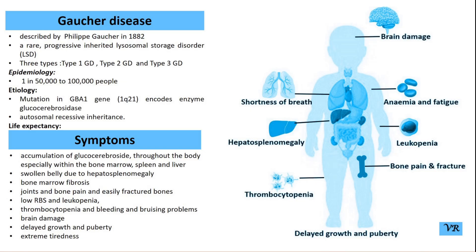The GBA1 gene is present on chromosome 1 at position q22, consists of 12 exons, the size of the gene is 7.6 kb, and it encodes a protein of 536 amino acids.